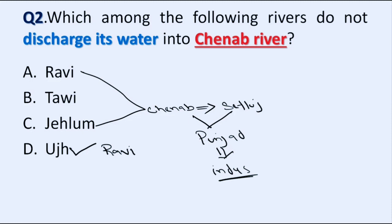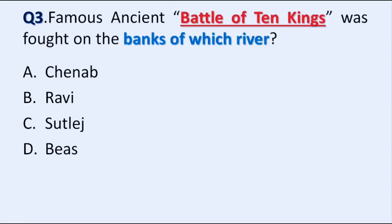Our next question is: the famous ancient Battle of Ten Kings was fought on the banks of which river? Option A: Chenab, B: Ravi, C: Sutlej, D: Beas. Correct answer is Option B, Ravi. The Battle of Ten Kings was fought on the banks of River Ravi. The Sanskrit name of River Ravi is Airavati.